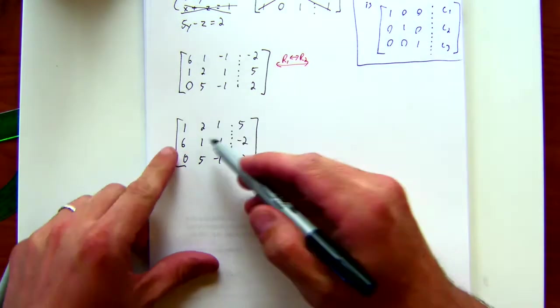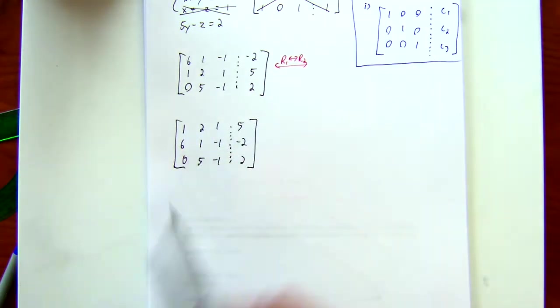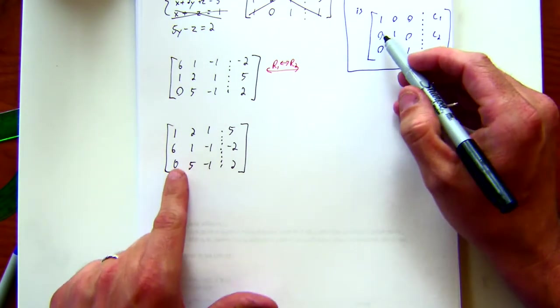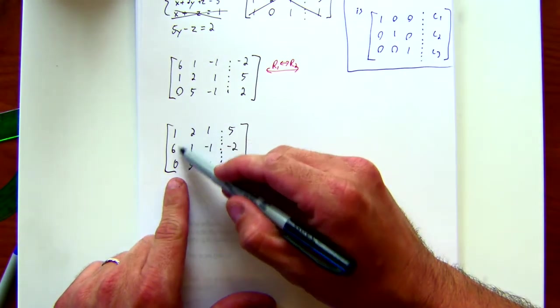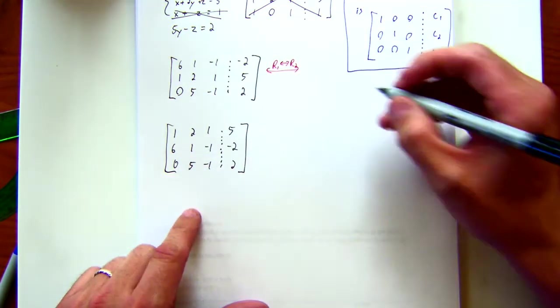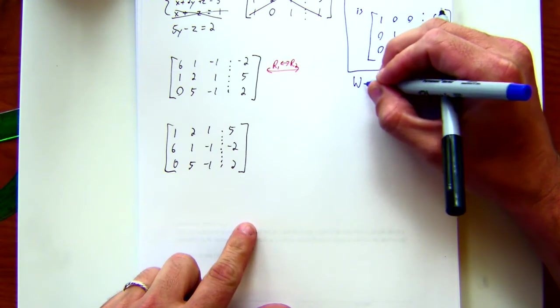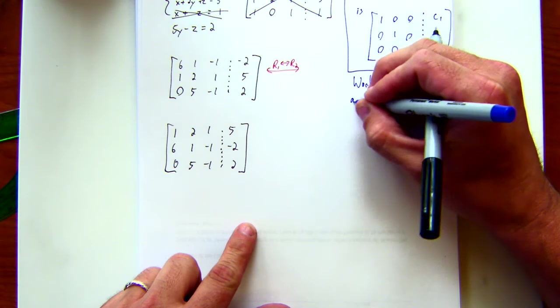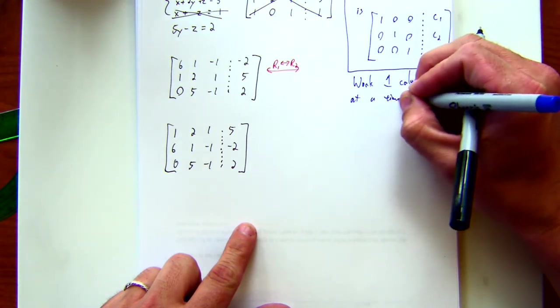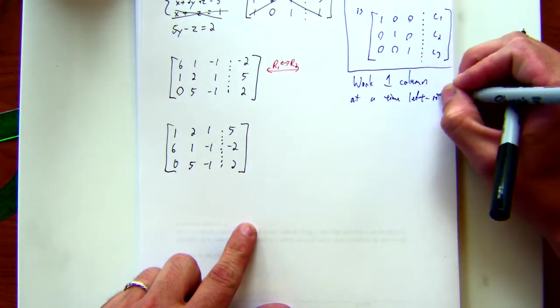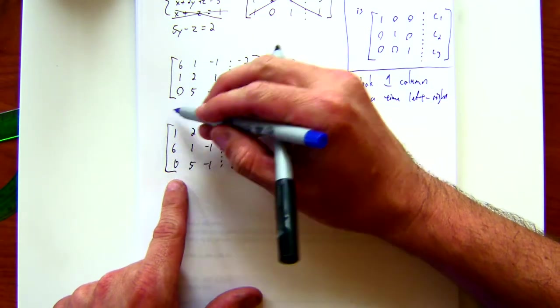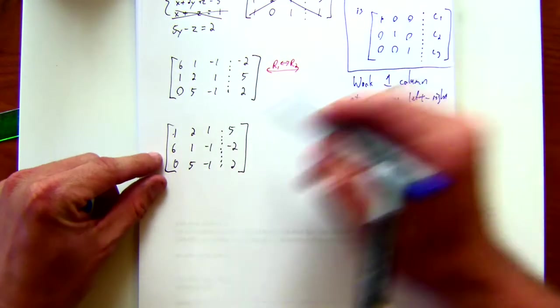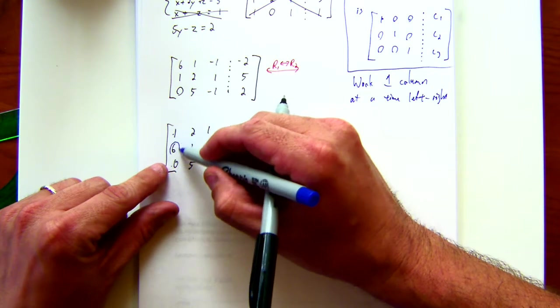Okay, so now what? I've got something that looks like this. I want to make... Remember, I keep this in my mind. I want to make... So I've got a one and I've got a zero here. You might want to think, maybe work one column at a time. Work one column at a time. Left to right. So I'm still working on the leftmost column here. I've got my one in the right place. I've got my zero in the right place. I just need to make this guy a zero.